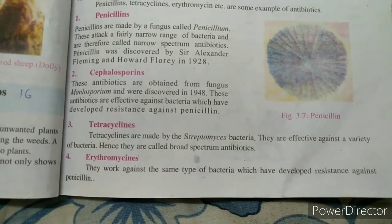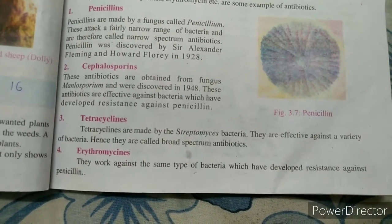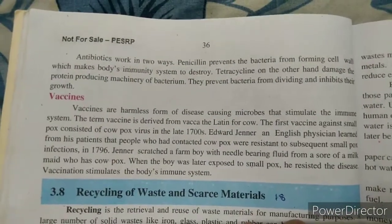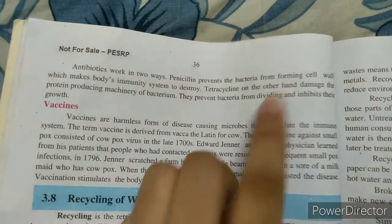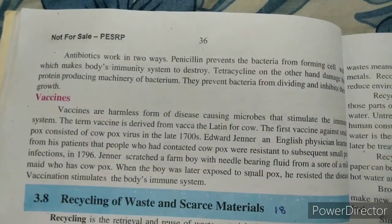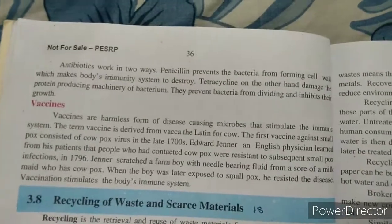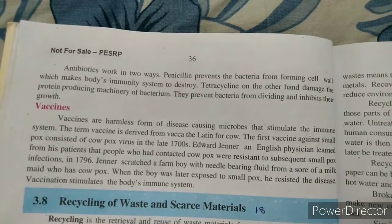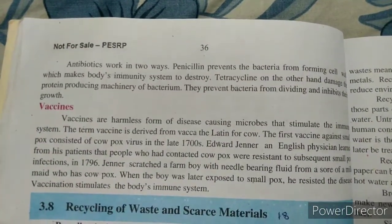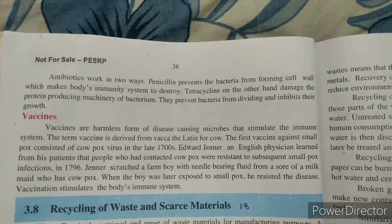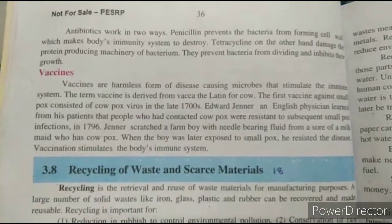Erythromycin works against the same type of bacteria which have developed resistance against penicillin. Antibiotics work in two ways: penicillin prevents bacteria from forming a cell wall, which allows the body's immune system to destroy the bacteria. Tetracyclins, on the other hand, damage the protein-producing machinery of the bacterium, preventing bacteria from dividing and inhibiting their growth.